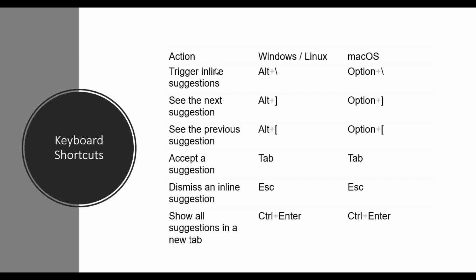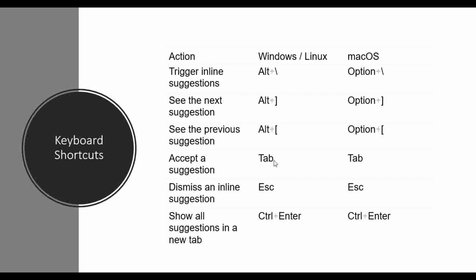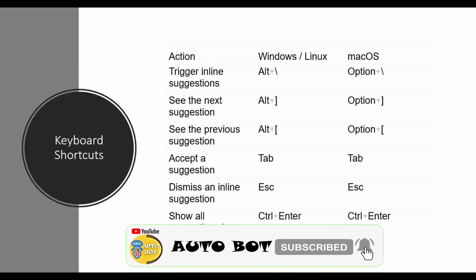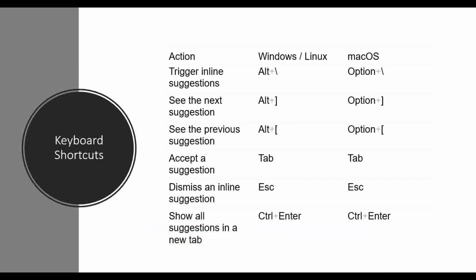To trigger an inline suggestion you press Alt+Slash; on macOS use Option+Slash. If you're not satisfied with that solution and want to go to the next suggestion, use Alt+bracket, and to see previous suggestions use Alt+reverse bracket. To accept a suggestion just press Tab and that code snippet will be added to your IDE. To dismiss an inline suggestion press Escape. To show all suggestions in a new tab, press Control+Enter and it will show all suggestions for the prompt you provided.